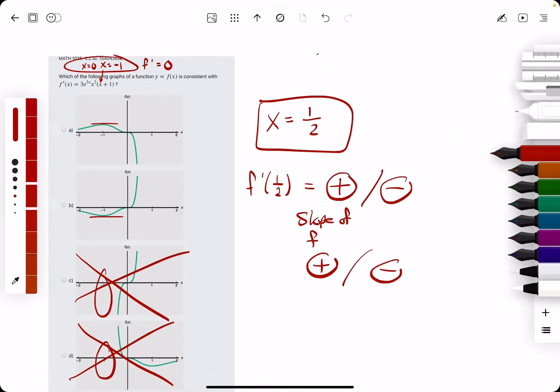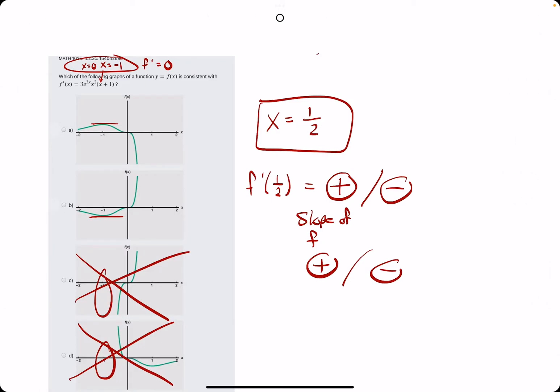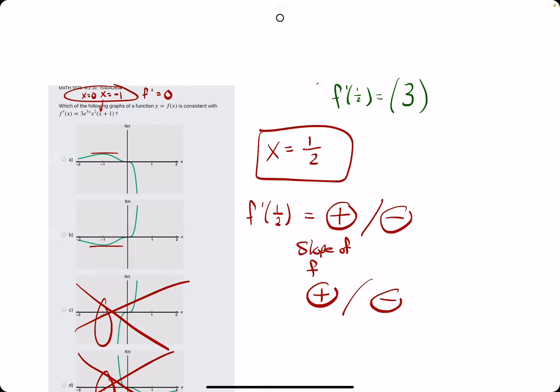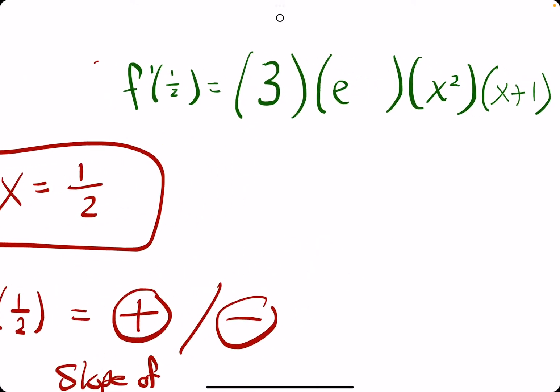So watch what we can do by hand. We could plug this into a calculator, but if we just do this, we'll do f prime at 1 half equals 3. We'll do the e term, we'll do x squared, and we'll do x plus 1. And we split it up into these different terms being multiplied together. And what we're going to do is identify their sign.